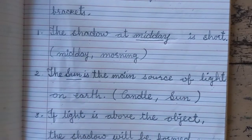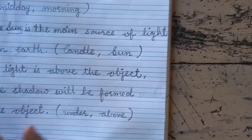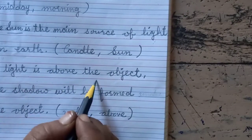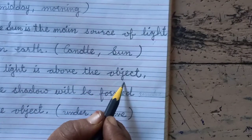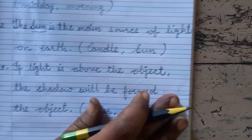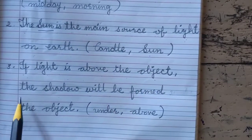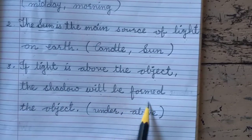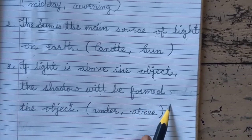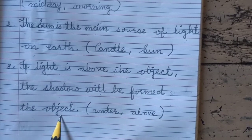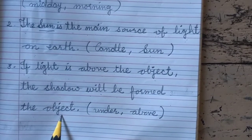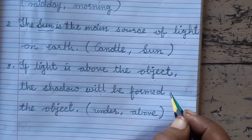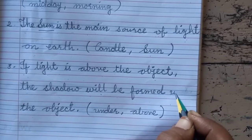Number 3: If light is above the object, the shadow will be formed blank the object. Answer: under.